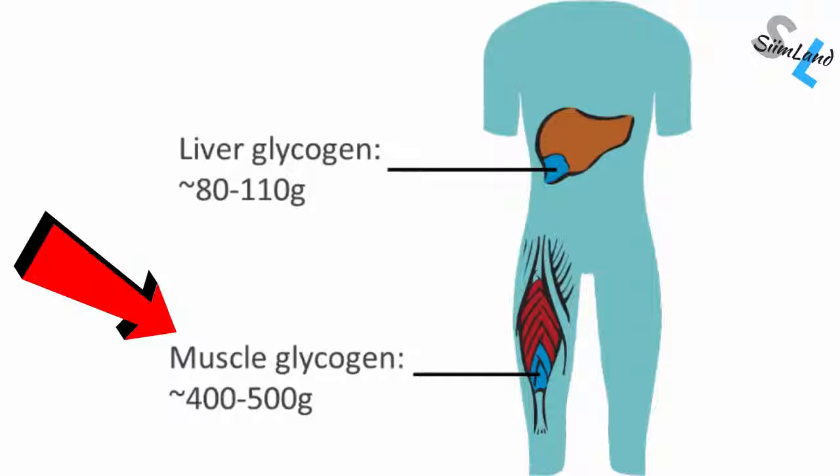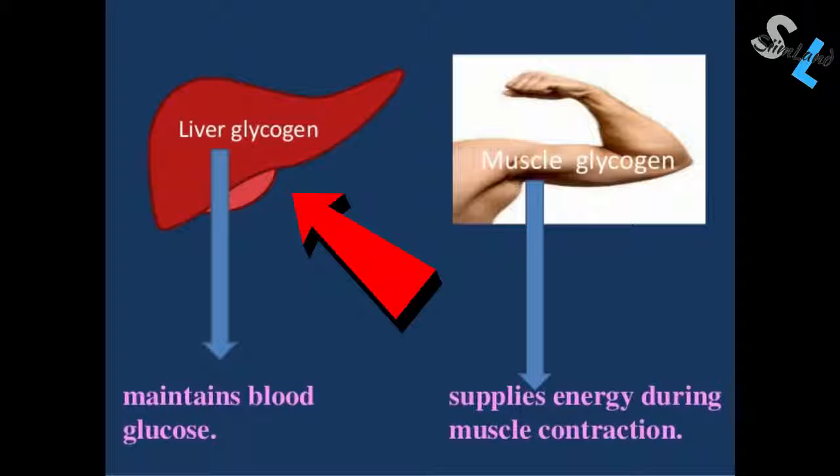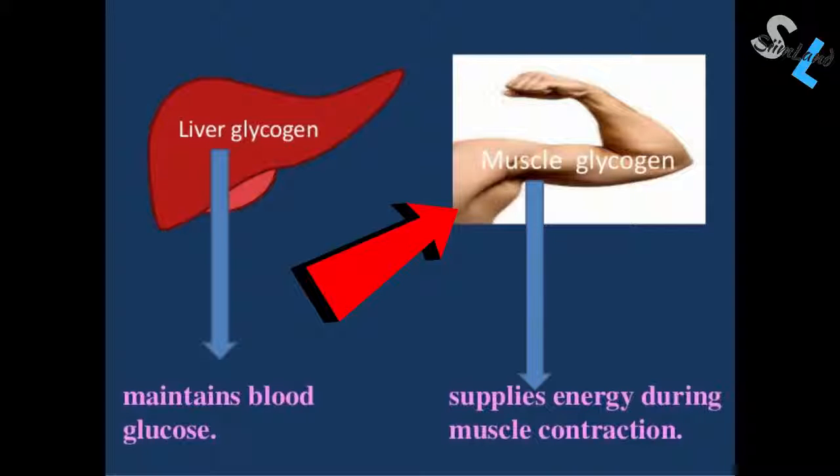There are 300 to 500 grams of glycogen in the muscle cells. However, muscle cells have a different function than the liver. Liver glycogen regulates energy homeostasis and blood sugar, whereas muscle glycogen is used for energy production under high energetic demands, such as sprinting, lifting weights, high-intensity interval training, ultramarathon, etc.